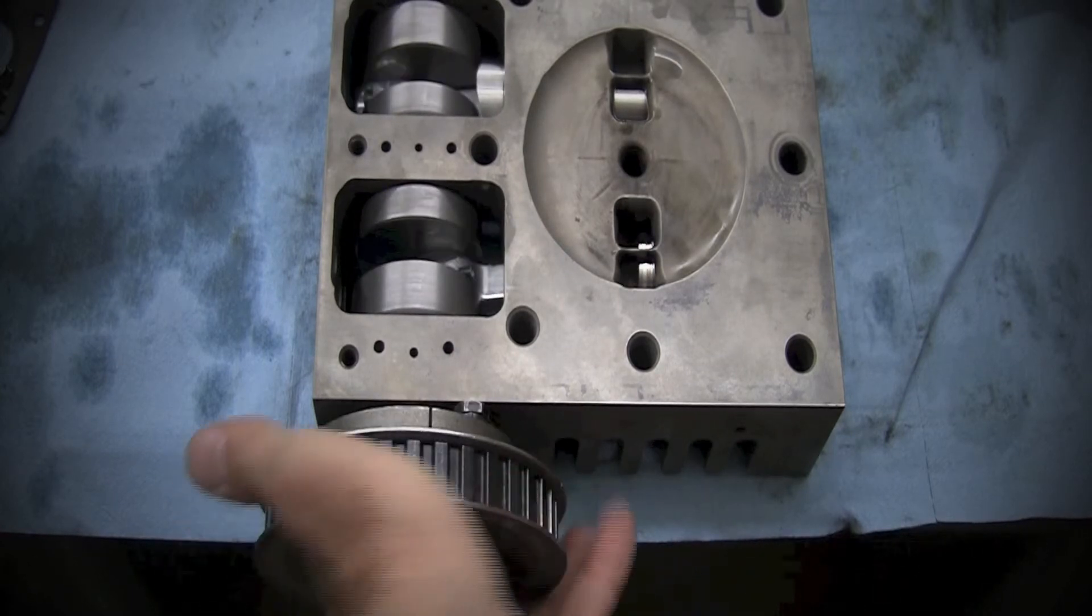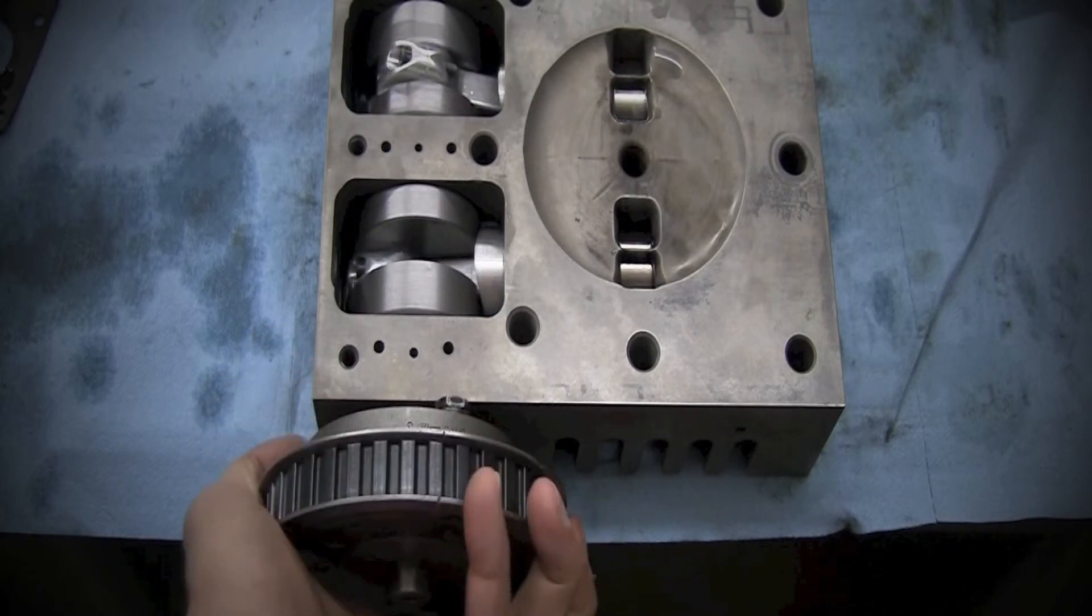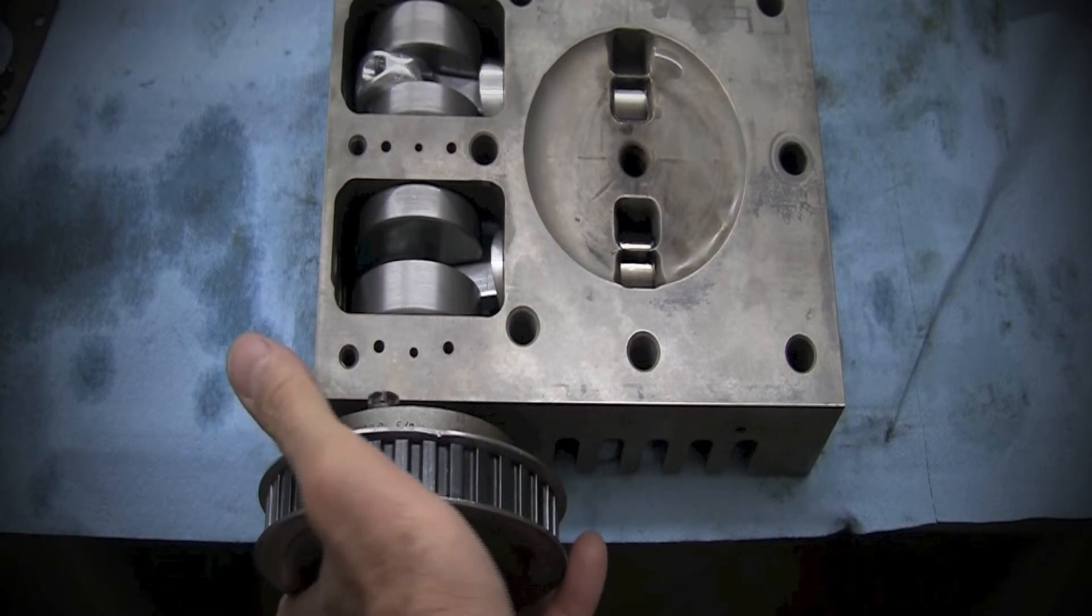That reduction in friction is what the glide valve head is all about, getting rid of the spring-loaded poppet valve tension.